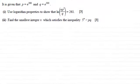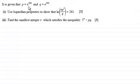Hi, now in this question we're given that p equals e to the power 280 and q equals e to the power 300. In part one we've got to use logarithm properties to show that the natural log of e times p squared all divided by q is equal to 261. And in the second part, find the smallest integer n which satisfies the inequality 5 to the power n is greater than pq.